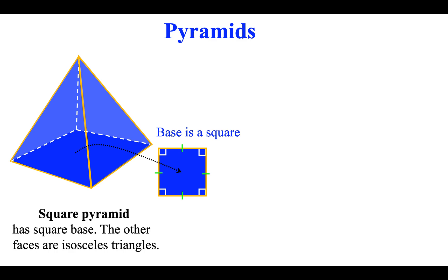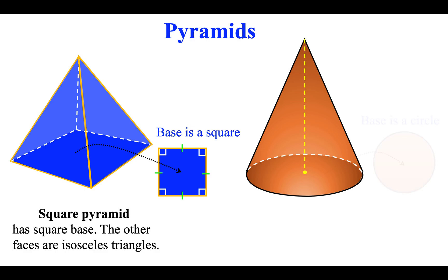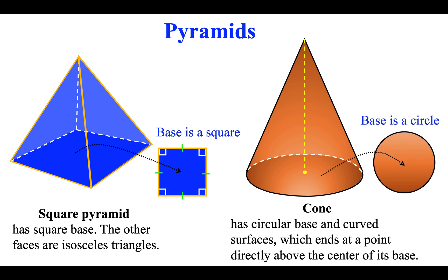Pyramids. Square pyramid has a square base, and the other faces are isosceles triangles. Cone has a circular base and a curved surface which ends at a point directly above the center of its base.